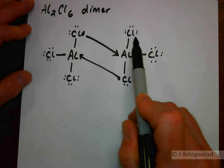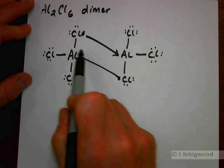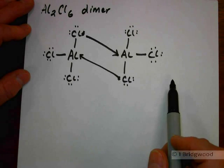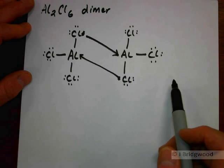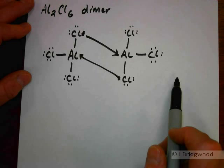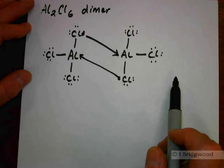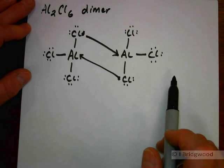This molecule, this dimer, two monomers bonded together, satisfies both aluminiums in terms of completing their octets. They now have four outer shells of electrons. Remember, aluminium is in period 3, so it doesn't have four outer shells of electrons, but it does have noble gas electron configuration.